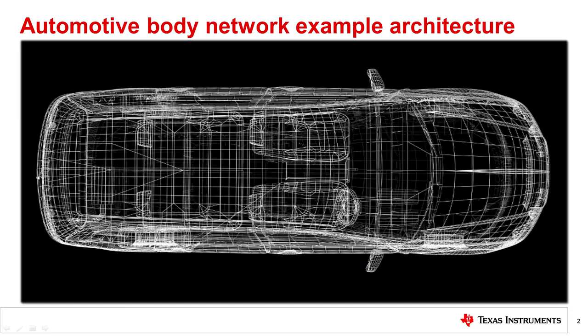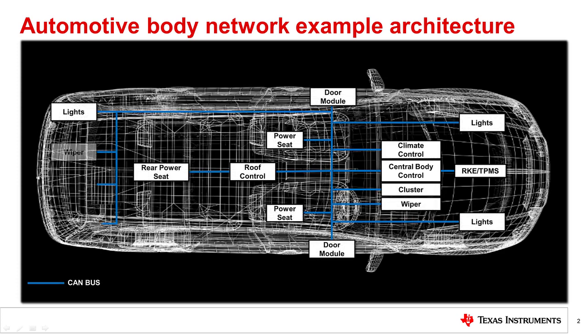This is an example of a typical automotive body network. The central body control, or any similar master device in an automobile, needs to communicate with other devices in the car—devices that are frequently located far from the master itself—in order to complete tasks. The CAN bus, shown here in blue, allows components to talk to each other seamlessly in the automobile.